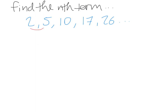To get from 2 to 5, there's a difference of 3. To get from 5 to 10, there's a difference of 5. To get from 10 to 17, there's a difference of 7. And to get from 17 to 26, there's a difference of 9. Clearly these numbers are different, so this cannot be an arithmetic or linear sequence.